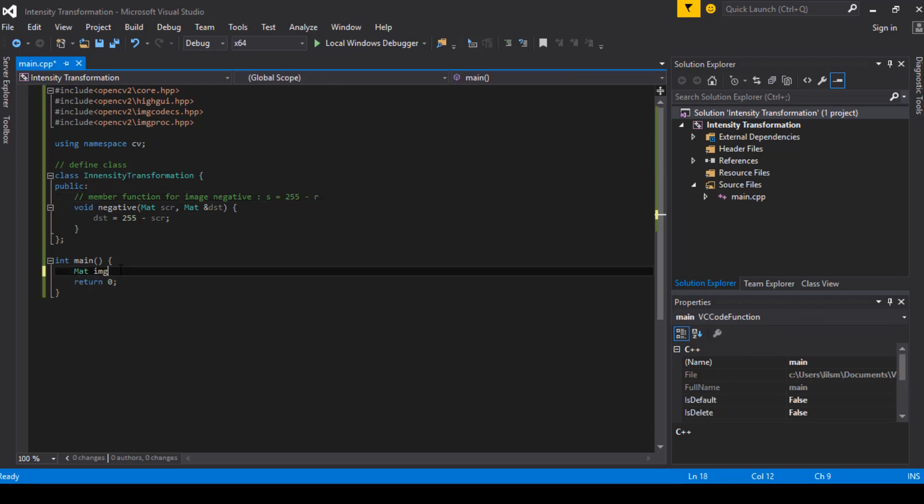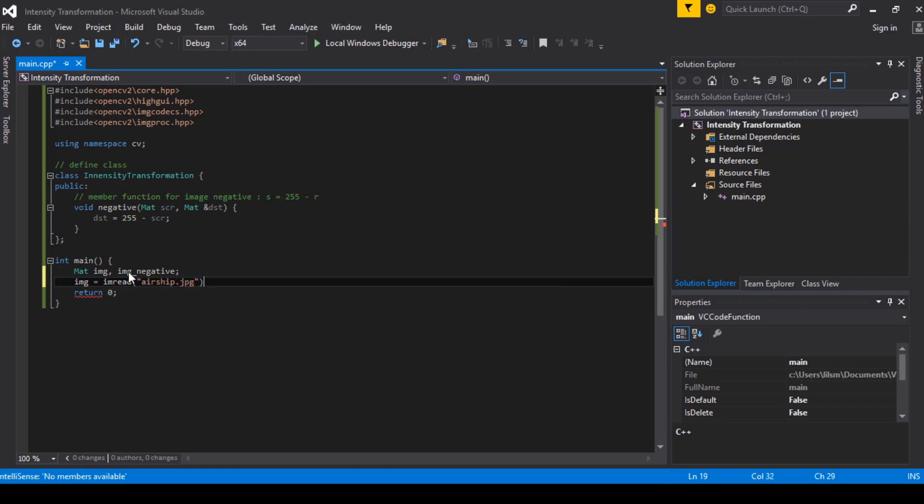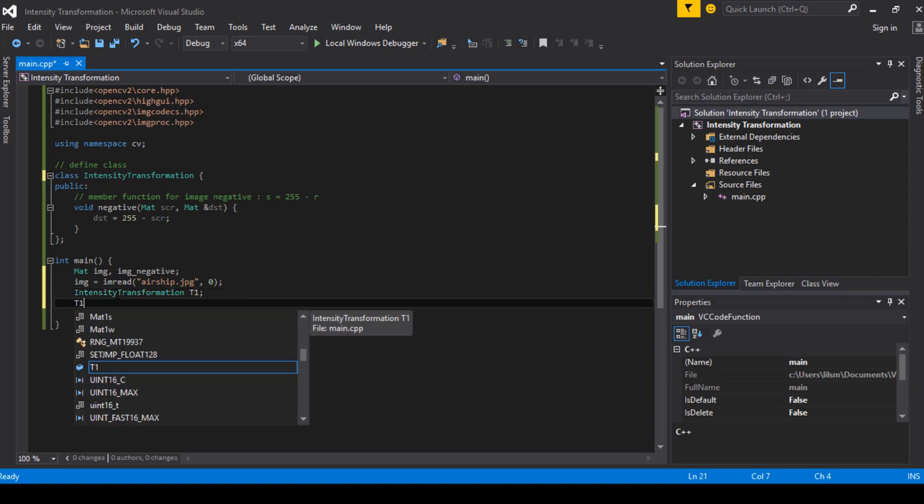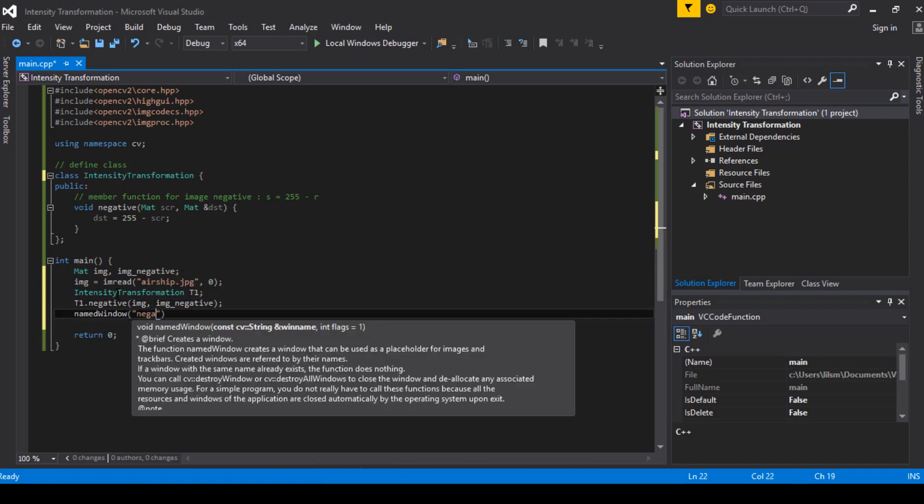Now let's go to main function. First, define mat object for the input image and image negative for the output image. Read the input image. Now create object from our class, I will name it t1. Now t1.negative. I will pass image and image negative. Finally, create window and show the outcome.